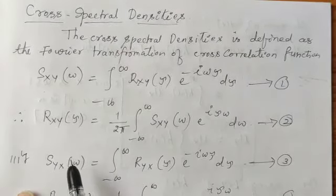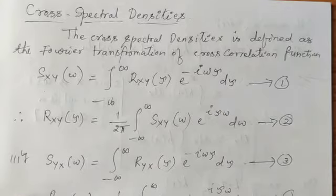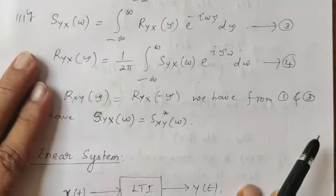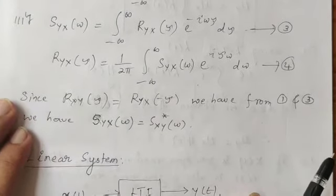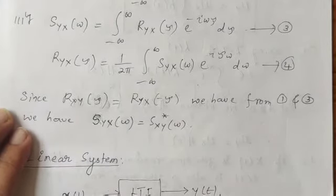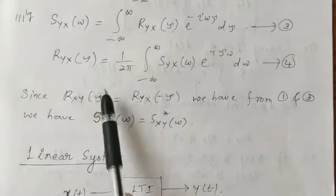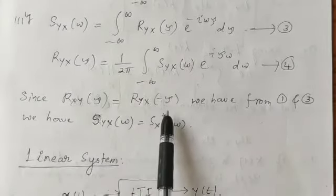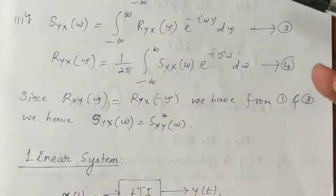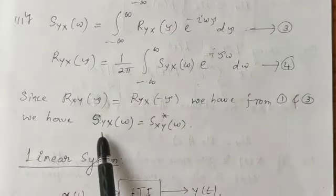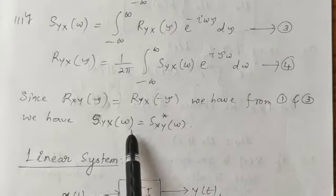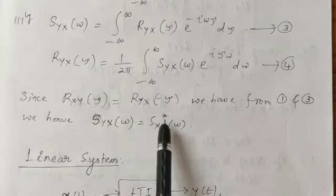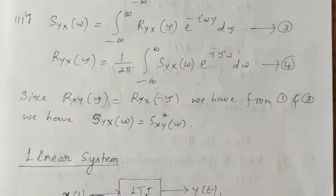Similarly, we can define Syx as well as Ryx with the same definition by interchanging x and y. We know that Rxy of tau is the same as Ryx of minus tau. Therefore, from these equations, you can find that Syx of omega is the same as Sxy of omega star, that is, the complex conjugate.